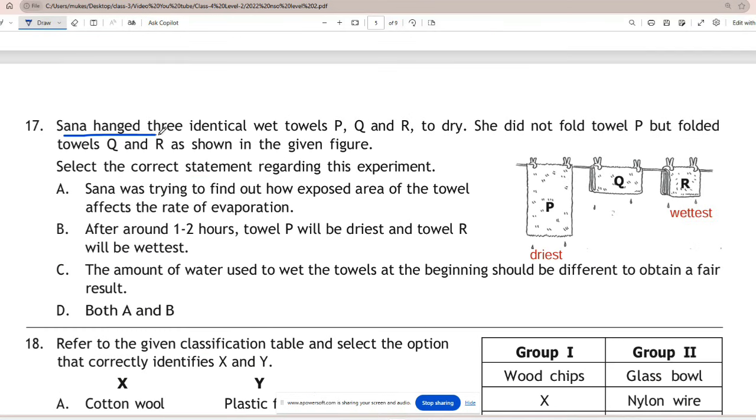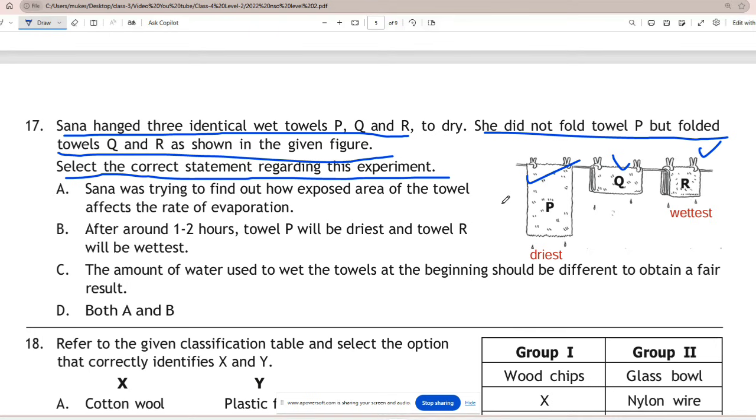Question 17: Sana hanged three identical wet towels P, Q and R to dry. She did not fold towel P but folded towels Q and R as shown in the given figure. Select the correct statement regarding this experiment. Correct answer is D - both A and B options. Because Sana was trying to find out how exposed area of the towel affects the rate of evaporation, and after around 1-2 hours towel P will be driest and towel R will be wettest, as P is not folded it hanged directly and R is folded multiple times that can be seen from given picture.